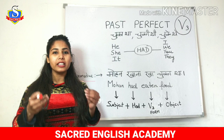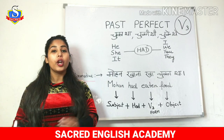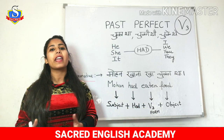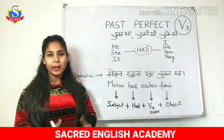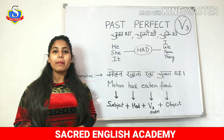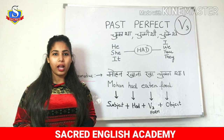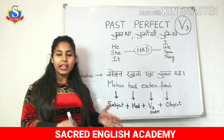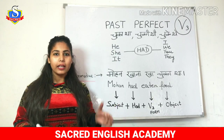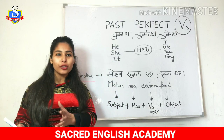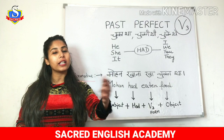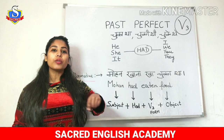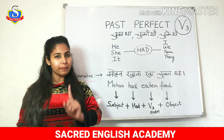Any action that happened in the past before another action - koi bhi action jo past mein hua hai, kisi doosri past ke action se pehle, wo aate hain past perfect tense mein. Jayse hi main ghar pauncha, Sohan ja chuka tha. So 'chuka tha' here - meri ghar paunchne se pehle, ye bhi past hai, aur Sohan ja chuka tha, ye bhi past hai. Lekin Sohan jo ja chuka tha, wo pehle ho chuka hai - meri paunchne se pehle. Hai toh dono past, but jo usse bhi pehle ho chuka hai, that is past perfect tense.